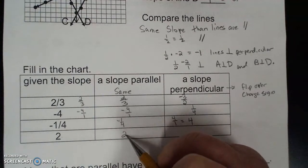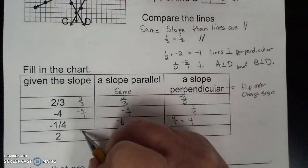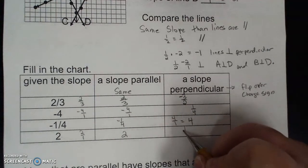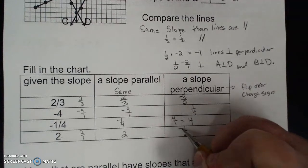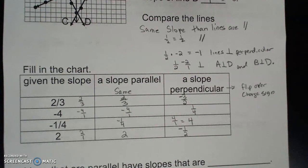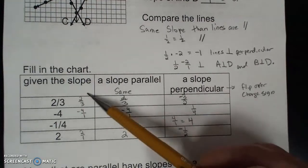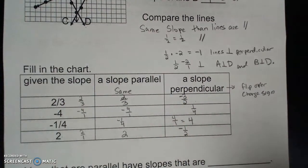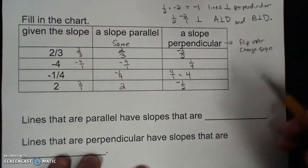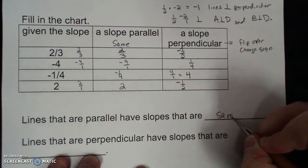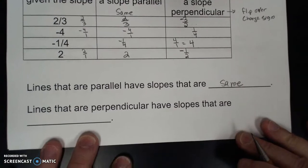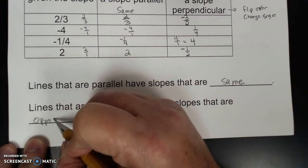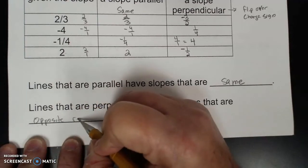Parallel slope is the same. For a slope of 2, written as a fraction that's 2 over 1. Perpendicular slope: flip it over, change its sign. The slope and its perpendicular slope have opposite signs. Lines that are parallel have slopes that are the same; lines that are perpendicular have slopes that are opposite reciprocals.